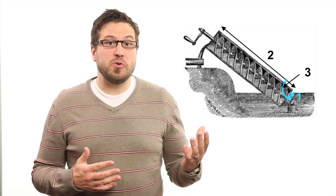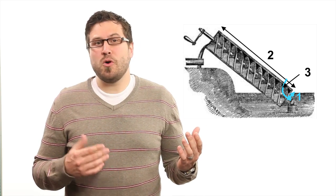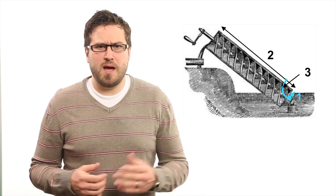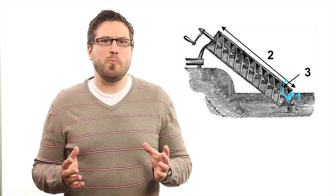To design an effective screw pump device, designers typically have to work with a number of fixed external constraints, including the radius of the screw's outer cylinder, the total length from the bottom to the top, and the slope of the screw pump.